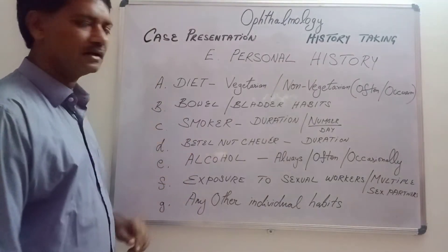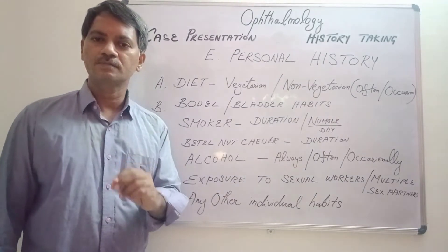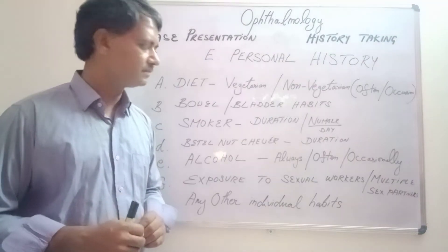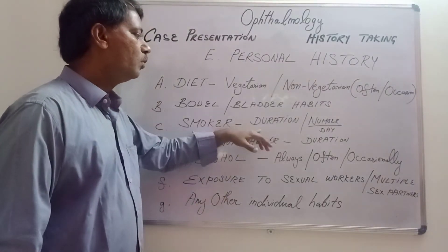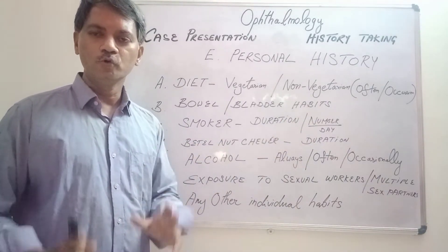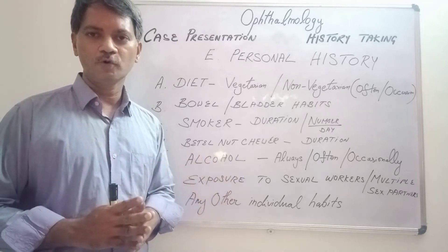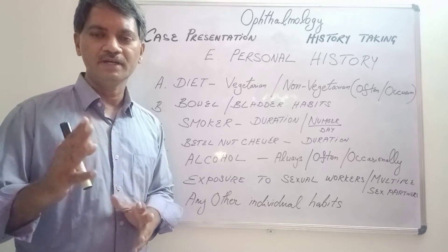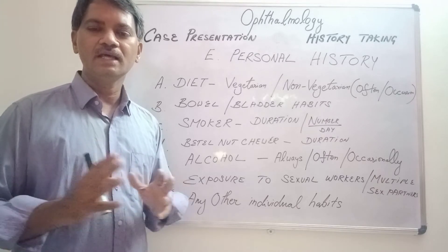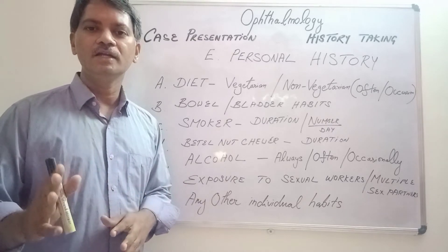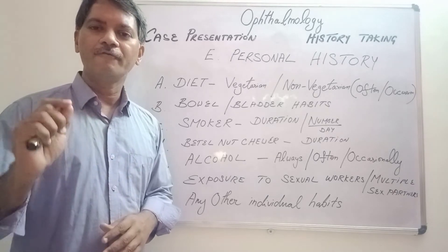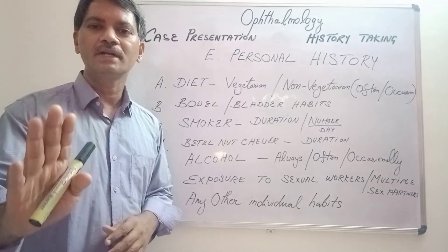Coming to smoking — you should ask the patient whether they are a smoker. The patient may say they smoke cigarettes, cigars, or whatever it is. You should ask them how long they have been smoking and how many cigarettes or cigars they smoke. So many years of smoking, so many cigarettes every day, may lead to pulmonary carcinoma. Similarly, smoking for a very long duration can lead to toxic amblyopia, which means it will affect the optic nerve of the patient, leading to permanent visual loss.